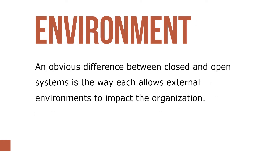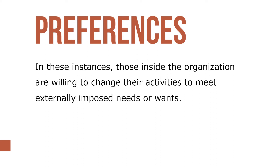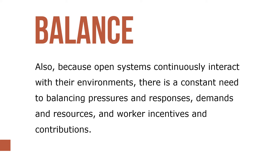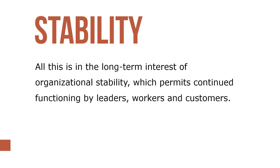An obvious difference between open and closed systems is the way each allows external environments to impact the organization. For example, a private firm will alter its marketing priorities in response to changing consumer preferences. In these instances, those organizations are willing to change their activities to meet externally imposed needs or wants. Because open systems continually interact with their environments, there is a constant need to balance pressures and responses, demands and resources, and worker incentives and contribution, all in the long-term interest of organizational stability.